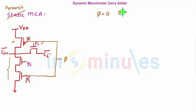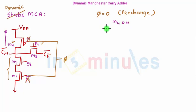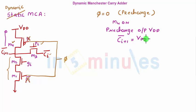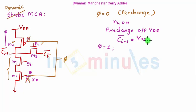When PHI equals zero, that's the pre-charge phase. Let's label all transistors: M1, M2, M3, and M4. When PHI equals zero, M4 is on and pre-charges the output to VDD, so CI+1 bar equals VDD. Also, M1 receives a zero at its input so it's off, meaning the pull-down path is off. With nothing present on G and P, nothing needs to be evaluated, and CI+1 bar remains equal to VDD.